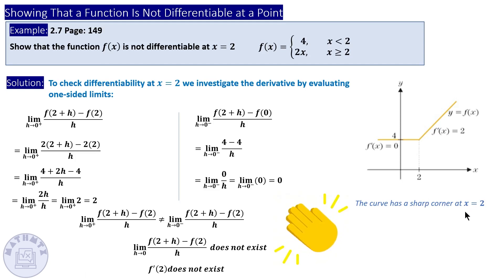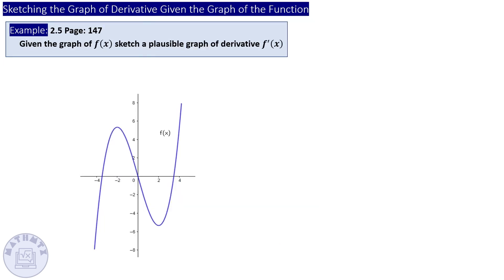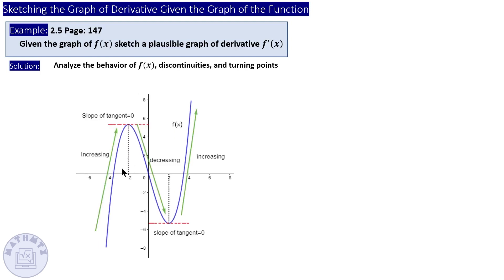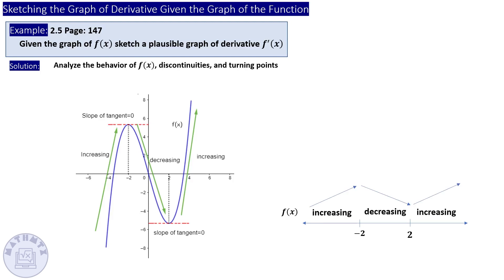If you check the graph, you'll see there's a sharp corner at x equals 2. Whenever you have a question asking to check differentiability at a given point, you must evaluate from both sides. Now for the last concept: given the graph of the function, can you sketch a plausible graph of the derivative? You have to analyze the behavior of the function — any discontinuities, any turning points.